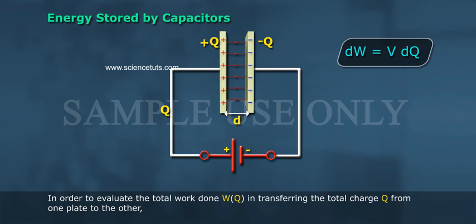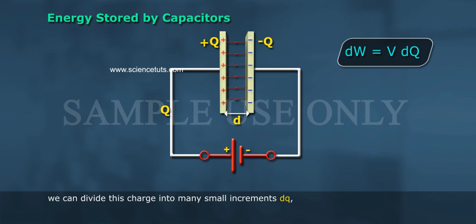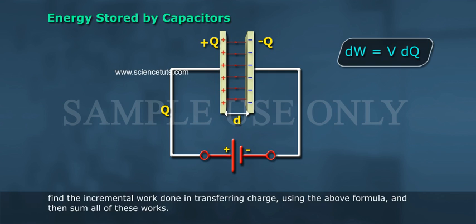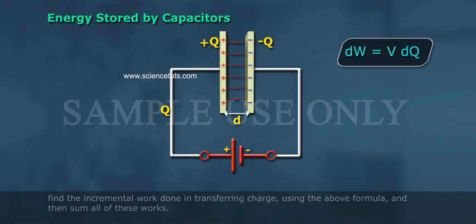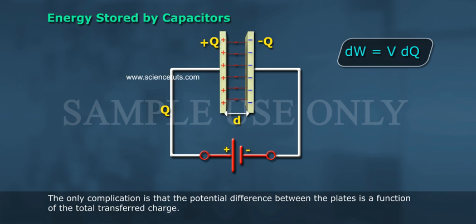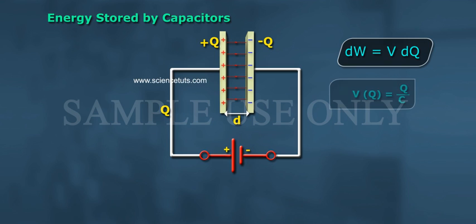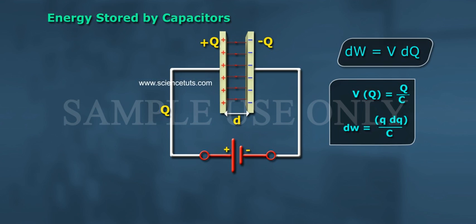In order to evaluate the total work done W(Q) in transferring the total charge Q from one plate to the other, we can divide this charge into many small increments dQ, find the incremental work done using the above formula, and then sum all of these works. The only complication is that the potential difference between the plates is a function of the total transferred charge. In fact, V(Q) = Q/C.